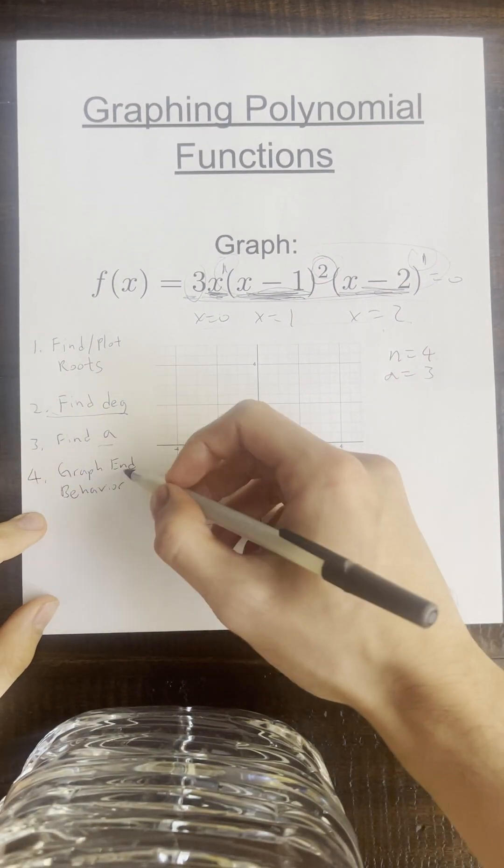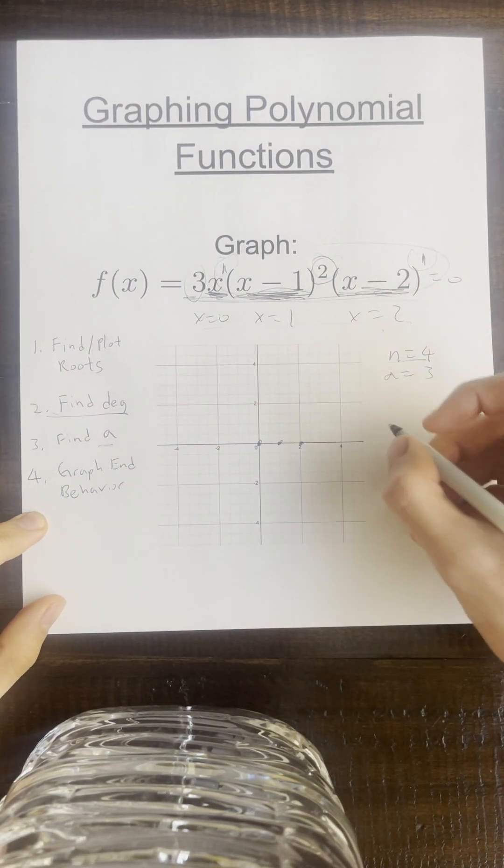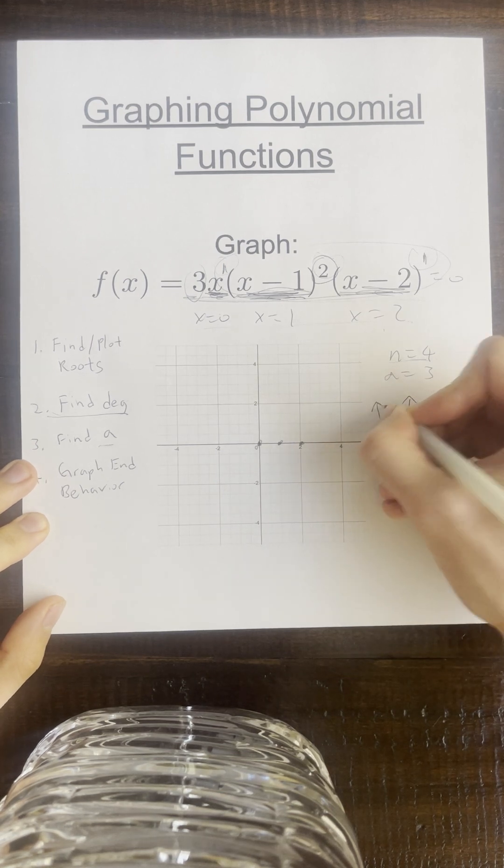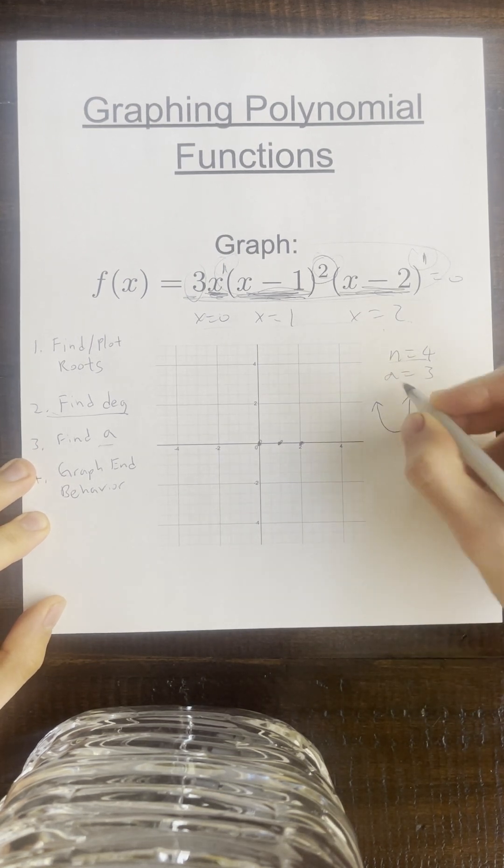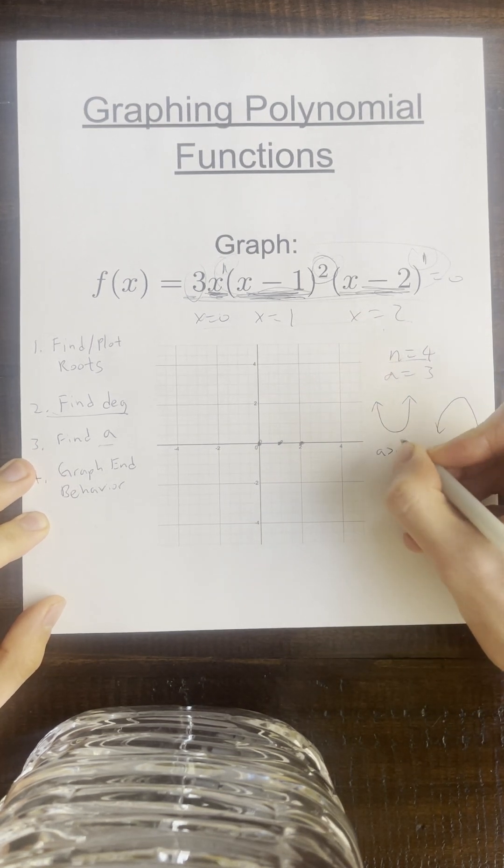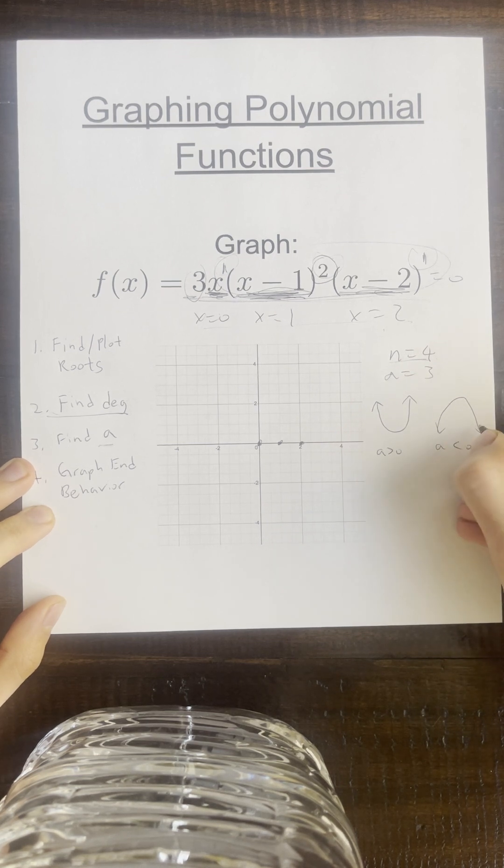Step four is to graph the end behavior. So when n is even, it's either going to open up or open down. And when a is greater than zero, it's going to open up. When a is less than zero it's going to open down.